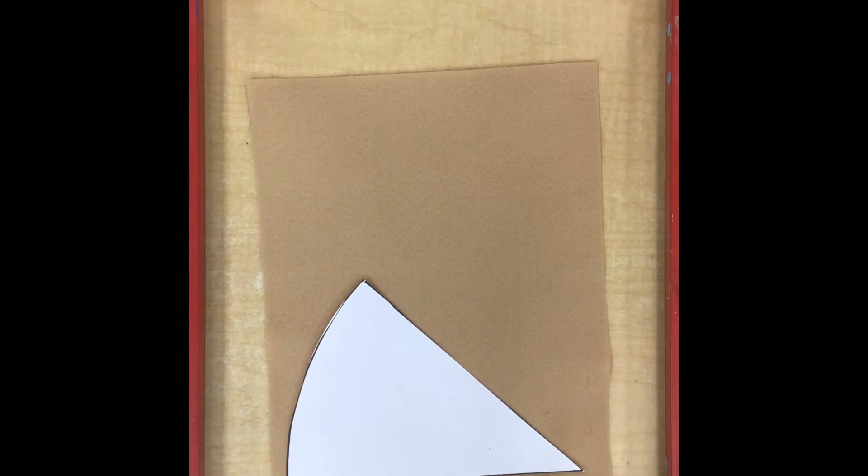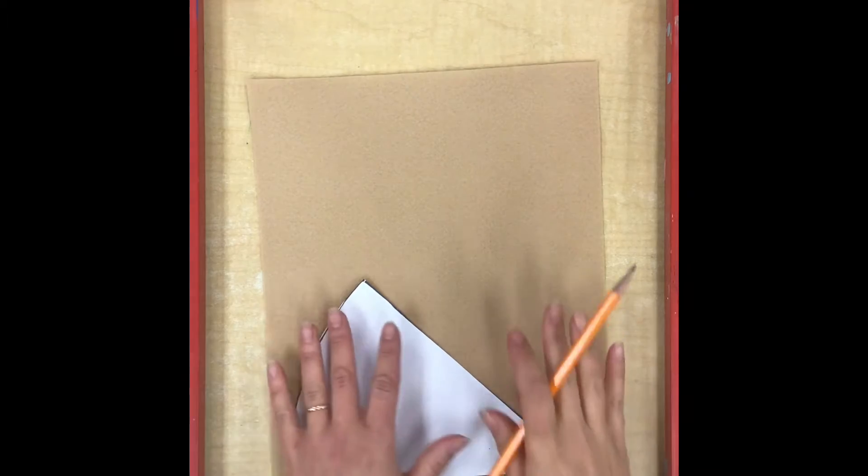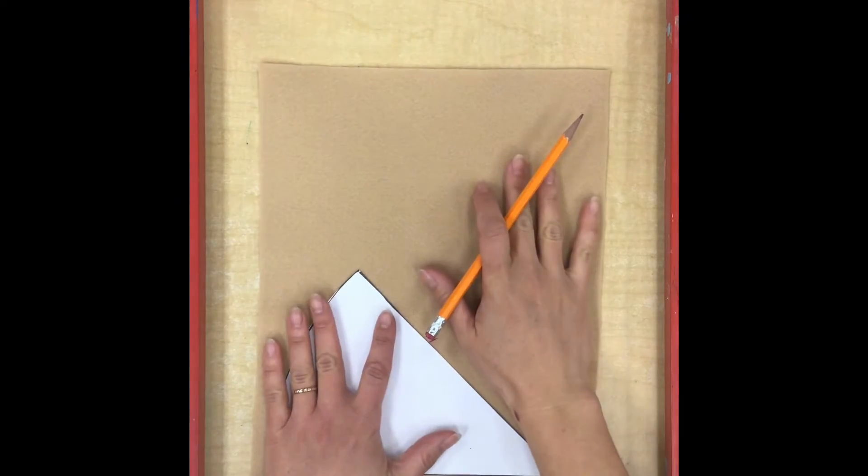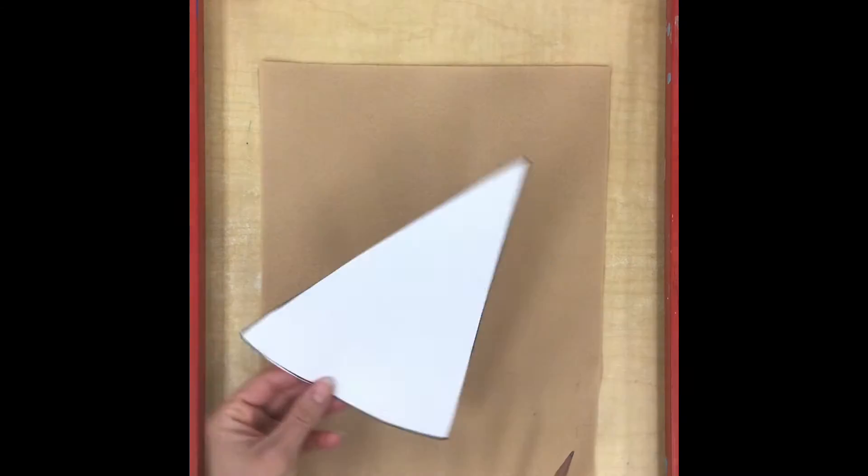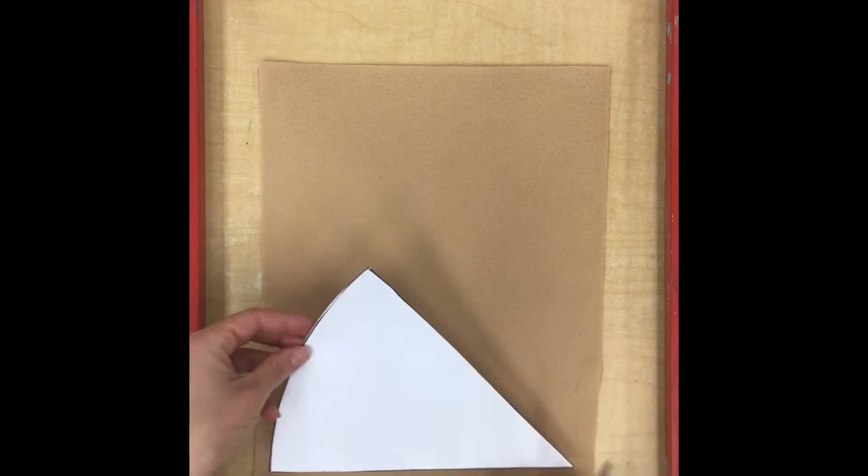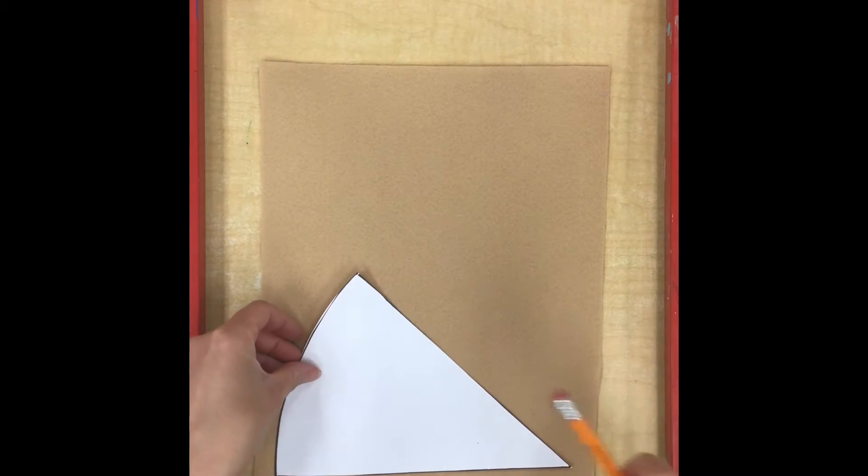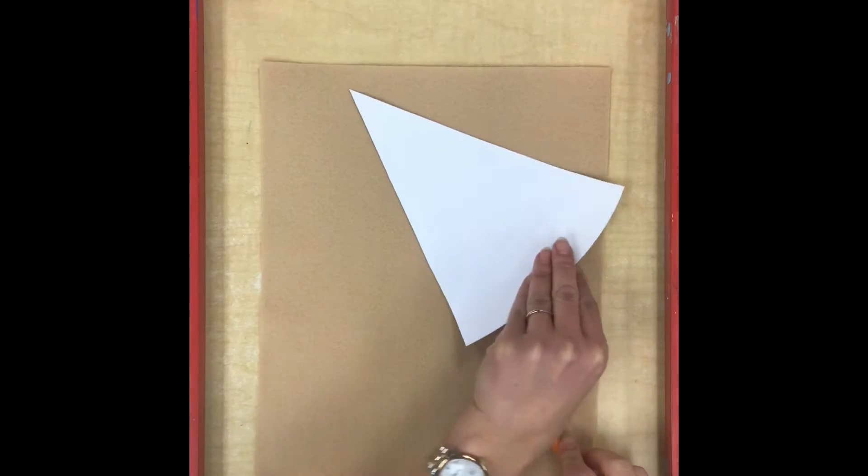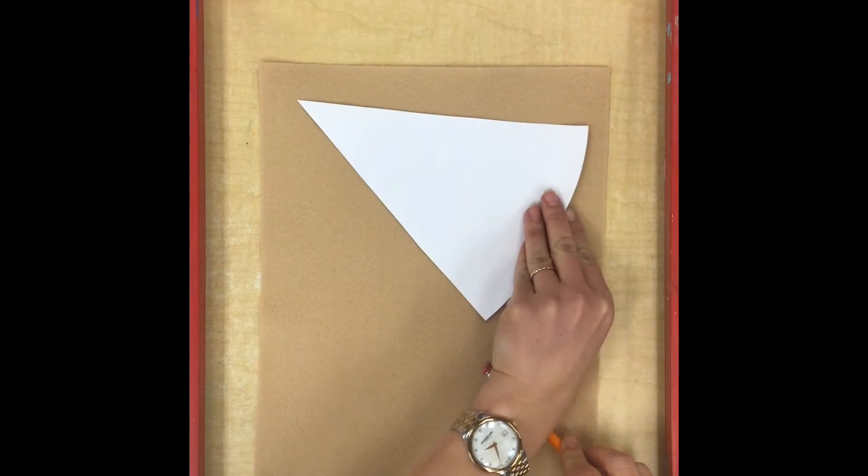Today we're going to start sewing our pop art pizza sculpture. You are going to get a large piece of felt and a pizza shaped template that we're going to use to trace our shapes. You need to make sure that you can fit two of these pizza shapes on your felt.